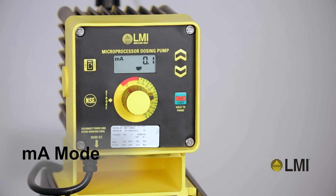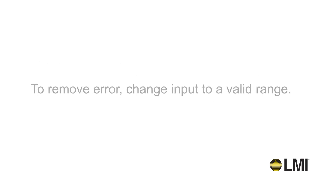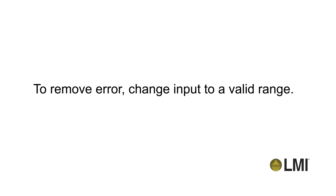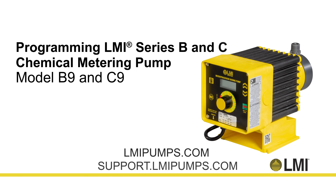The value input range is from 0.5 to 21 milliamps. An E5 error code will be displayed intermittently if the selected range is below 0.5 milliamps or above 21 milliamps. To remove the error, change the input to a valid range. Visit LMIPumps.com and support.LMIPumps.com for more product information.